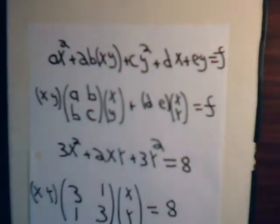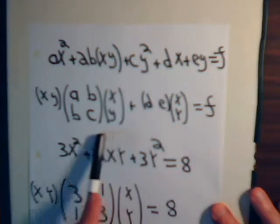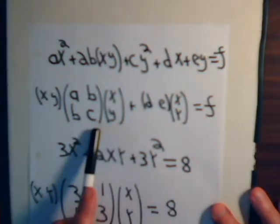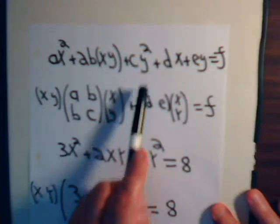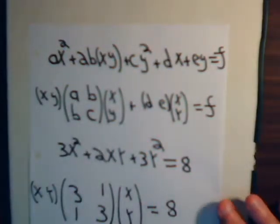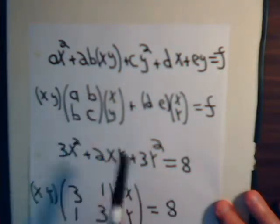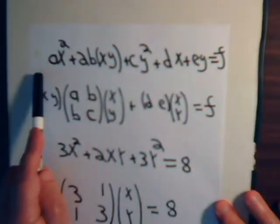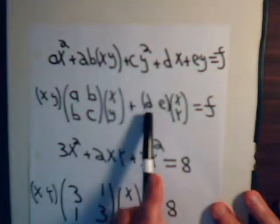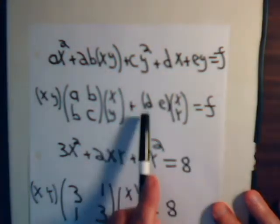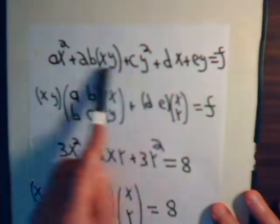What we demonstrated in the past two videos is that this part of the equation can be expressed in matrix form, where the matrix's diagonal elements are the coefficients of x-squared and y-squared, and the off-diagonal elements are equal to one half of the coefficient of the xy term. The linear part can be expressed as a row vector of coefficients times the column vector [x, y], giving dx plus ey equals f.